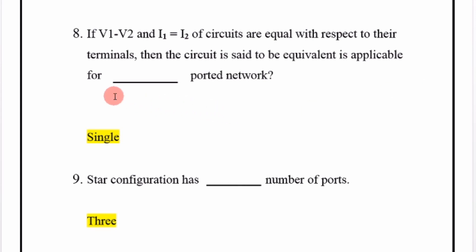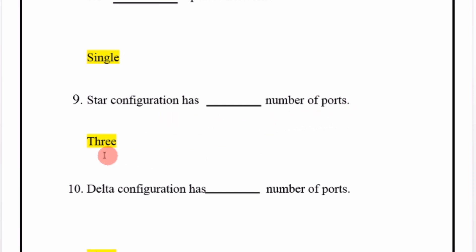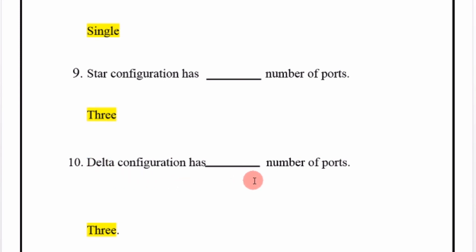Star configuration has 3 nodes. Delta configuration also has 3 nodes.